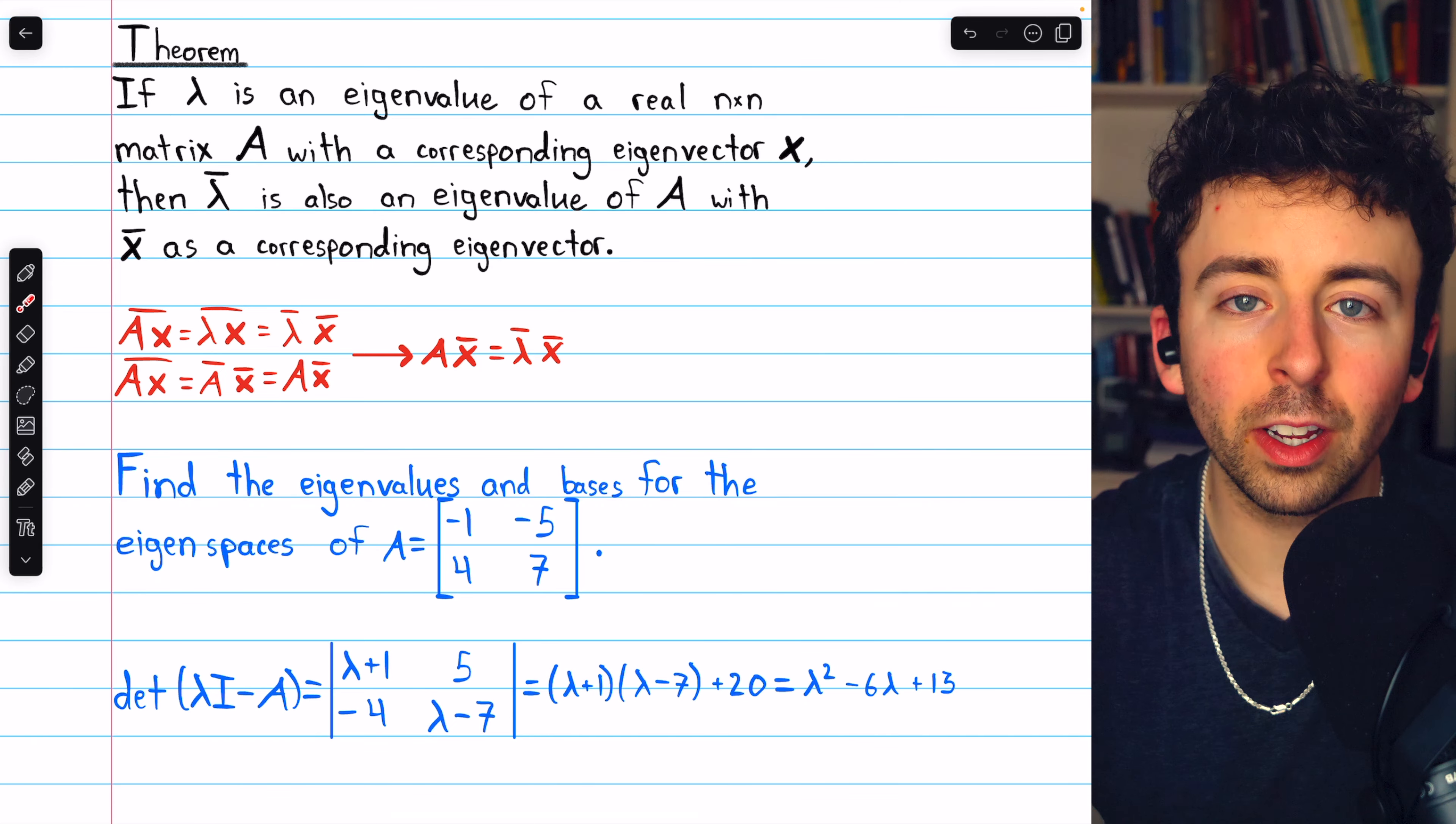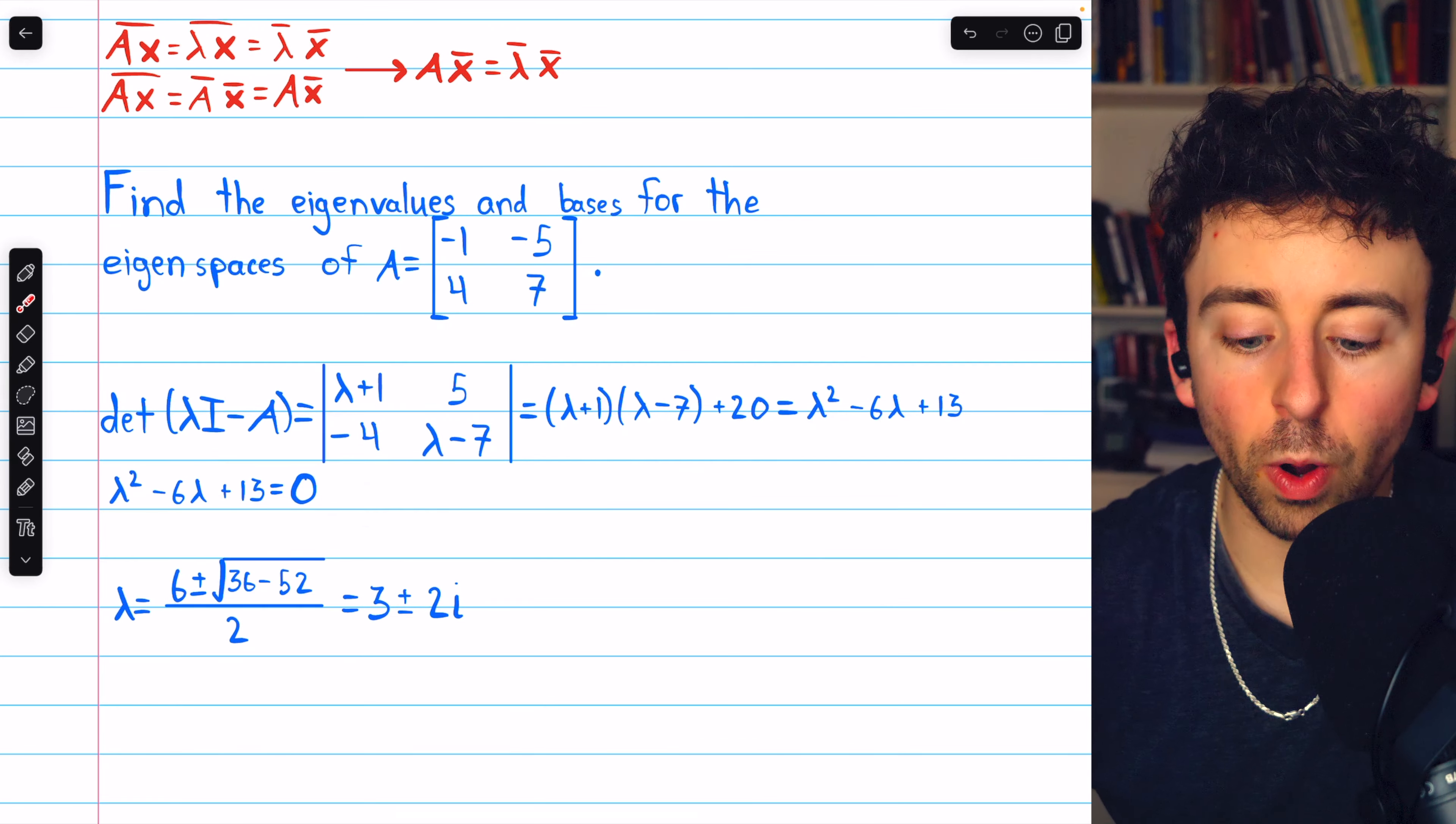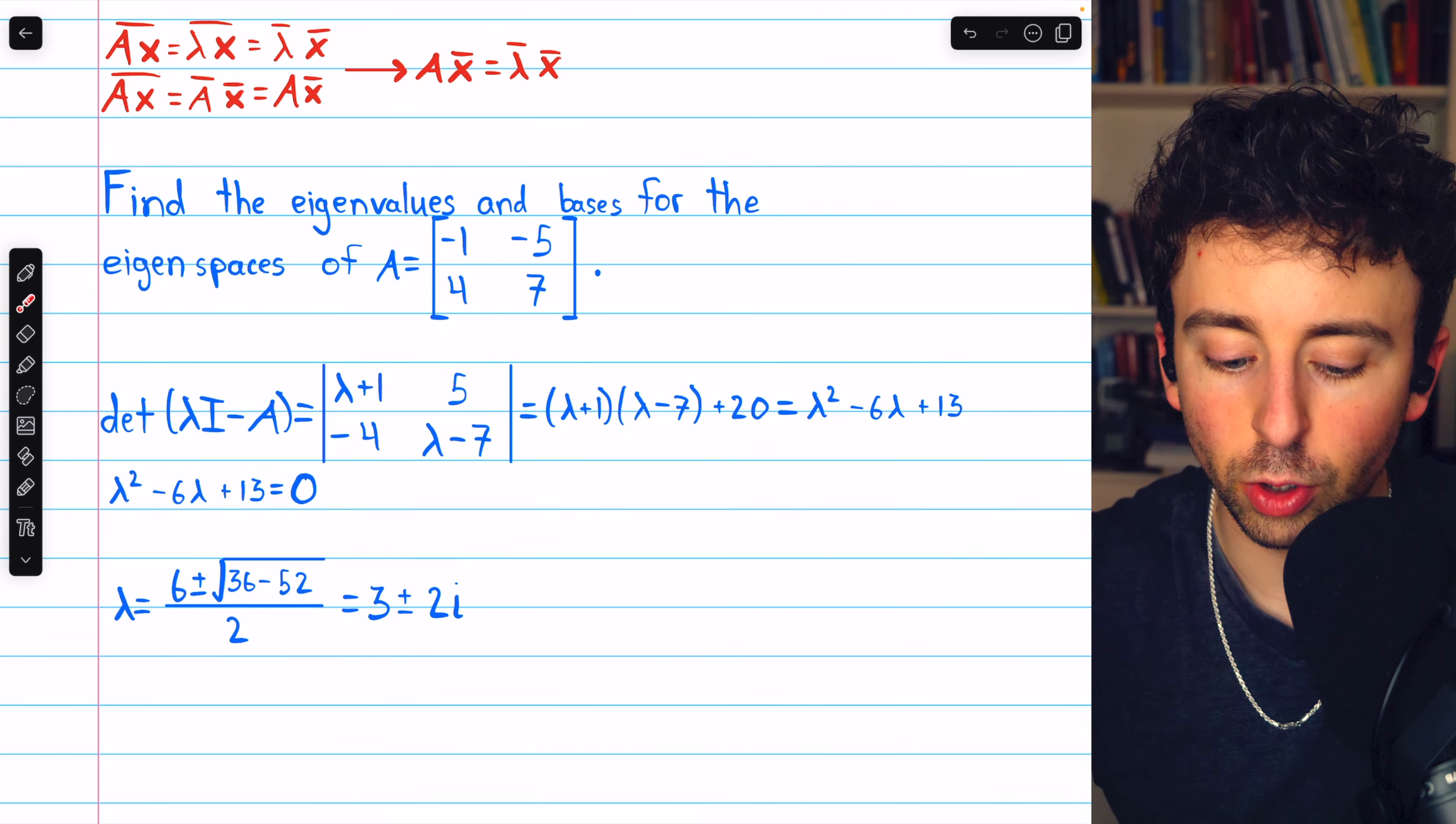Factoring this is not going to work. We'll have to bust out the quadratic formula to find our complex eigenvalues. Applying the quadratic formula, we get that lambda equals 3 plus or minus 2i.